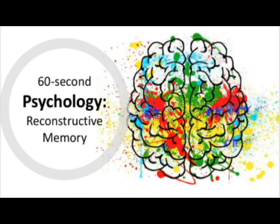For example, it's common to forget things, but this can cause problems when missing information disrupts the memory and stops it making sense. To overcome this issue, we often unintentionally fill the gaps with false information. This is called confabulation. Without the missing information, the memory doesn't make sense, so we fill the gaps, resulting in inaccurate memories.